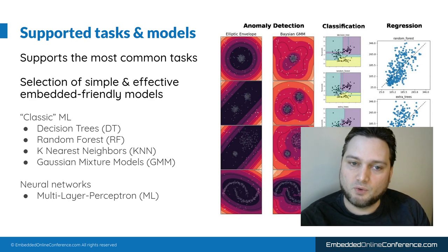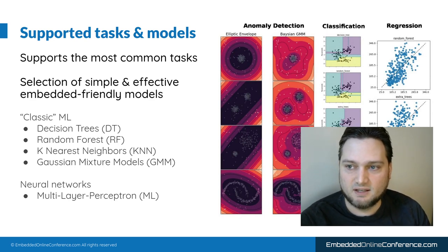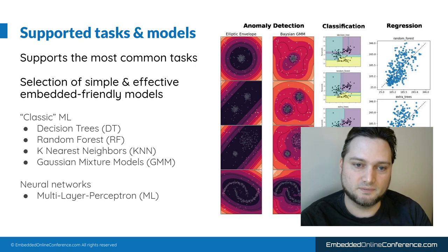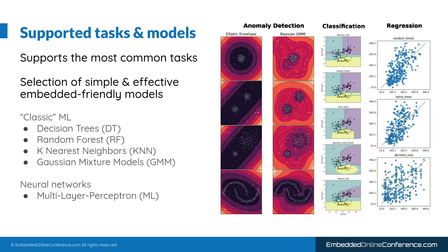emLearn supports the three most common machine learning tasks: classification, regression, and anomaly detection. It supports a selection of embedded friendly models such as tree-based ensembles, k-nearest neighbors, neural networks, etc.